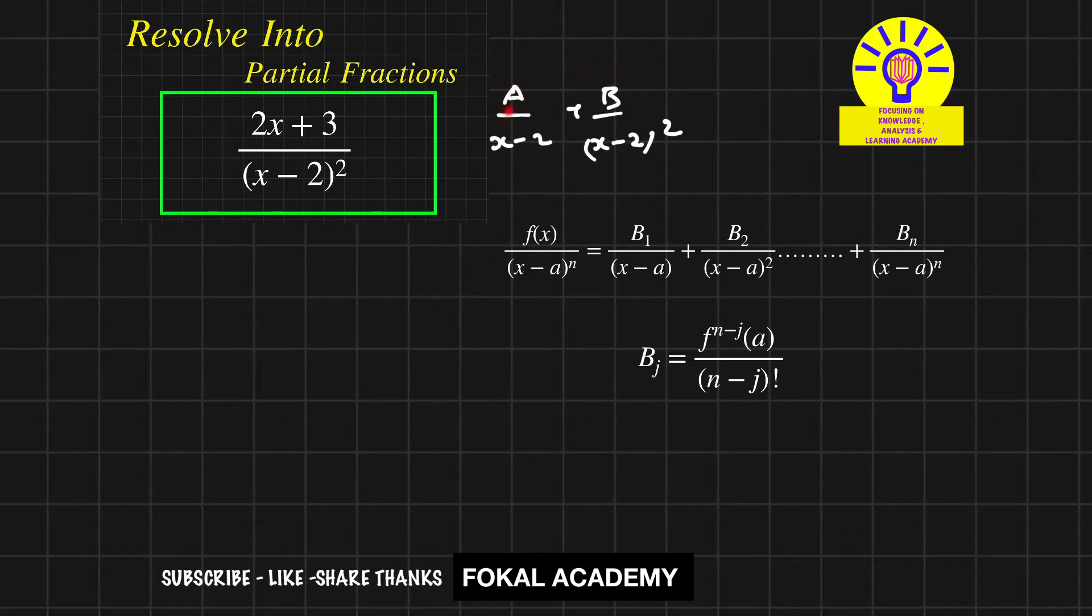Now, for the first constant value B₁, that means j equals 1, so first constant is A. Here power 1 is there. The formula is Bⱼ = f⁽ⁿ⁻ʲ⁾(a) / (n - j)!. So that equals f'(2) where n is 2, j is 1, and a is the value 2.